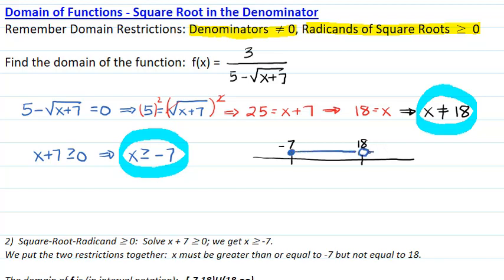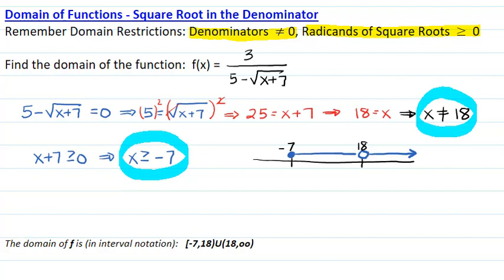But it cannot equal 18. The domain in interval notation will be closed at negative 7 comma 18 open, union open at 18 to infinity.